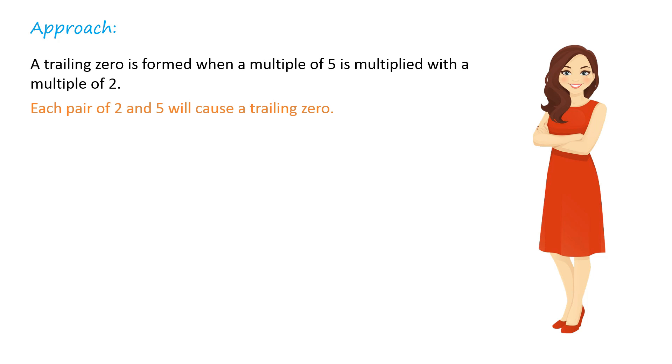A trailing zero is formed when we multiply a multiple of 5 with a multiple of 2. So each pair of 2 and 5 will cause a trailing zero. Now all we have to do is count the number of pairs of 5s and 2s in the multiplication. This will give us the total number of trailing zeros.